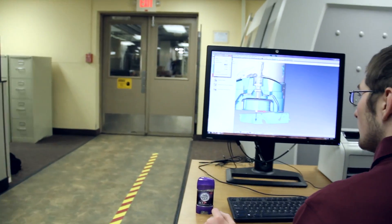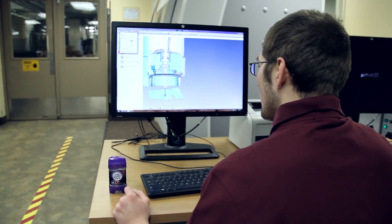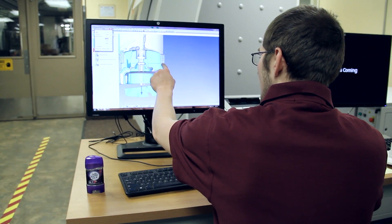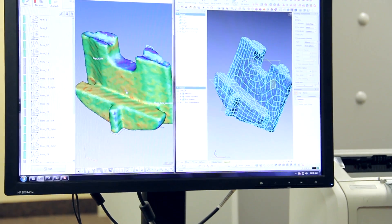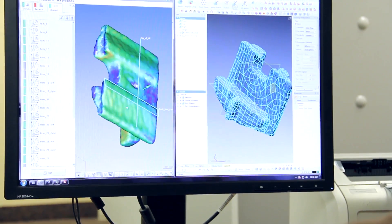The ZEISS systems and their software, Calypso, is able to tie together three technologies that we use: touchprobe CMMs, scanning CMMs, and the metrotomography systems. The one software will be able to control all of them and it gives us a large technology base for all types of metrology.